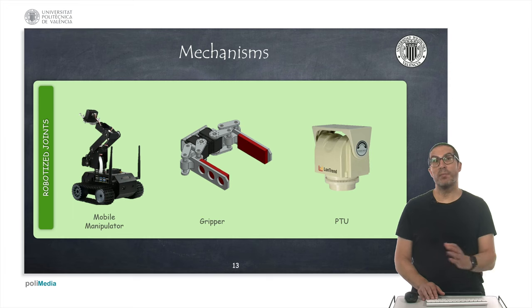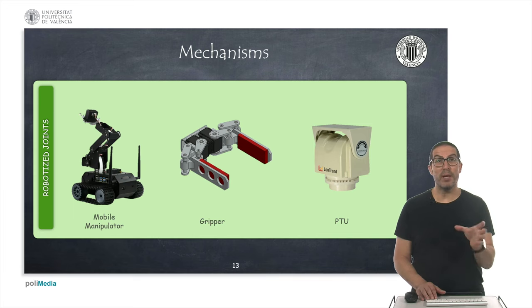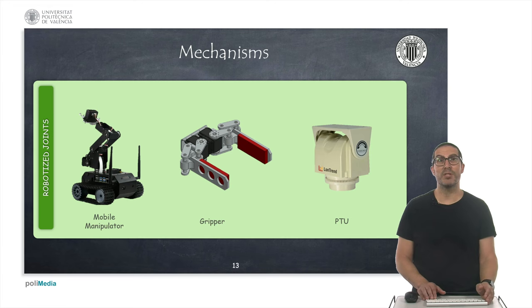Finally, some robots include also other kind of mechanisms. In this case for instance a robot arm on top of the mobile base, this is known as mobile manipulator. Other robots use a gripper in order to pick objects, or a PTU, a pan-tilt unit. It's a platform that as its name indicates is used to pan or tilt a device, for instance a camera, in order to point to some direction.